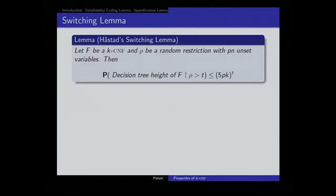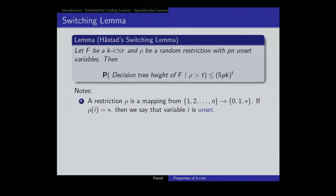The last part of this talk is the switching lemma — clearly one of the deepest results in circuit complexity. We have a KCNF. We take a random restriction — you can think of a restriction as a mapping from the variables to 0, 1, and star. If a variable is mapped to 0, it's set to 0; if mapped to 1, it's set to 1; if mapped to star, it's called unset. You take a random restriction where p is the probability of having unset variables.